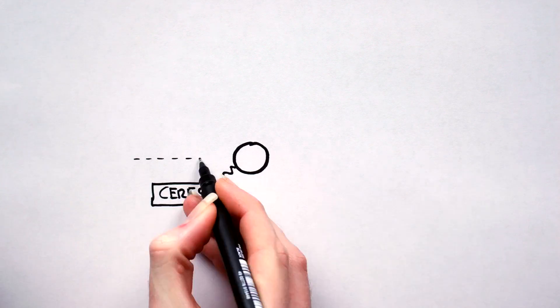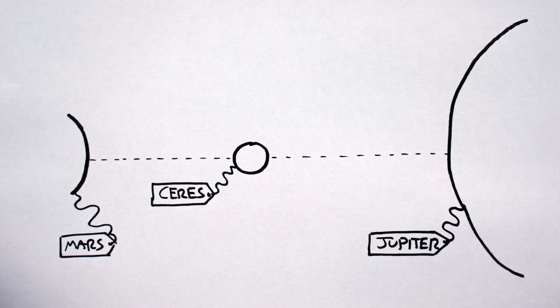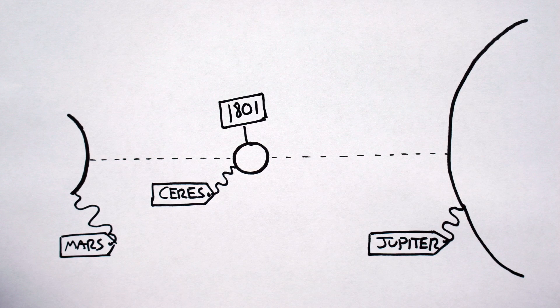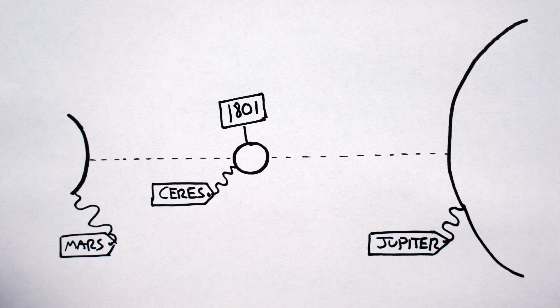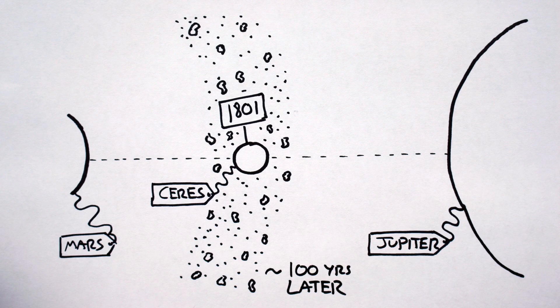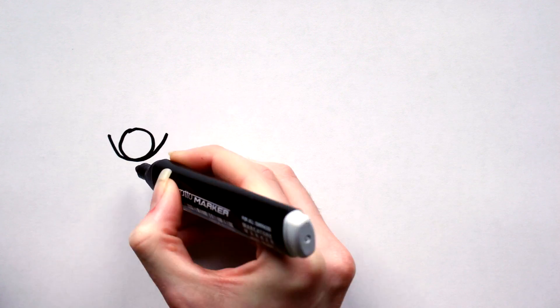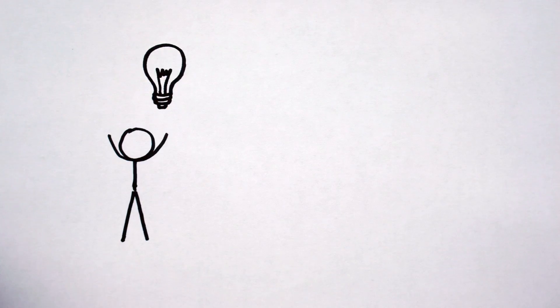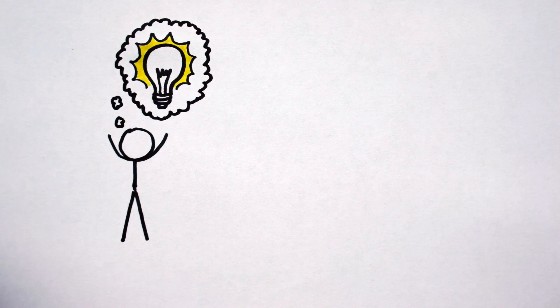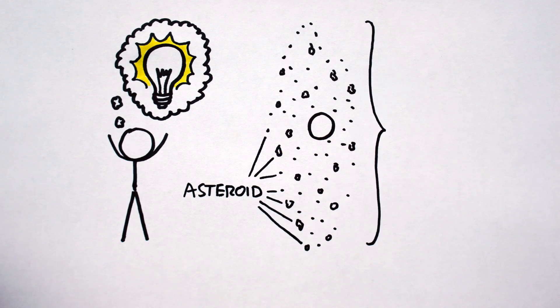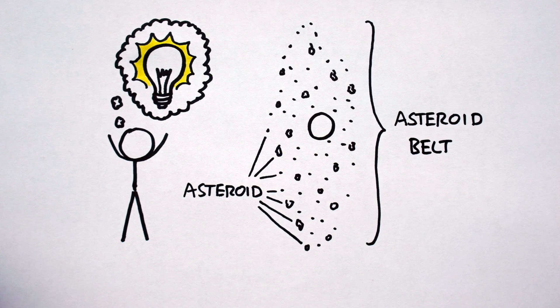Meet Ceres, the first dwarf planet. Located in between Mars and Jupiter, her discovery in 1801 was quickly followed by discovery of the planets Pallas, Juno, and Vesta. By 1899, an additional 460 objects were found in the vicinity of Ceres. So astronomers were like, yeah, maybe these aren't planets.